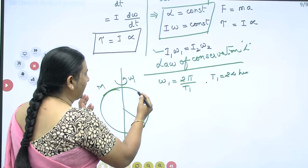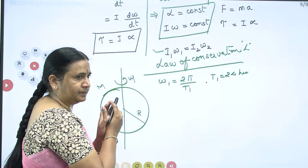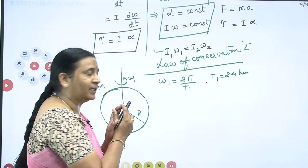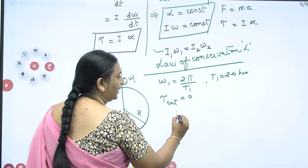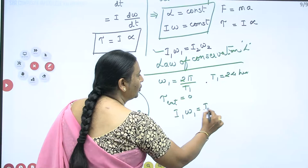They will ask: suppose suddenly the Earth is going to shrink to half of its radius. Then what happens to the time period? It is simple — since it is shrinking suddenly, no one is applying an external force. Since external torque is 0, then I₁ω₁ should be equal to I₂ω₂. This is a very commonly asked question.